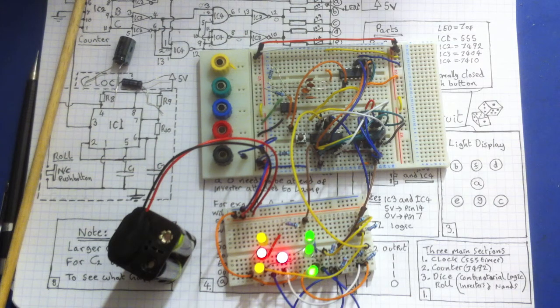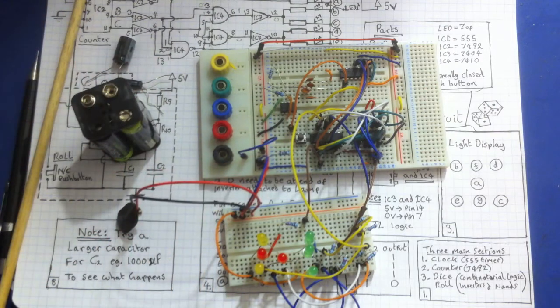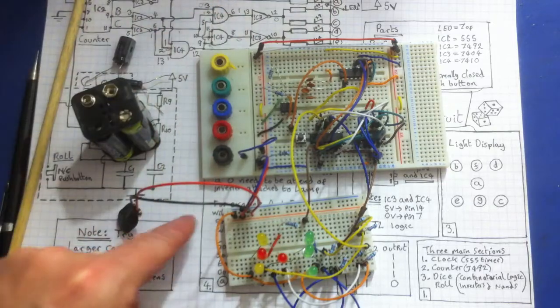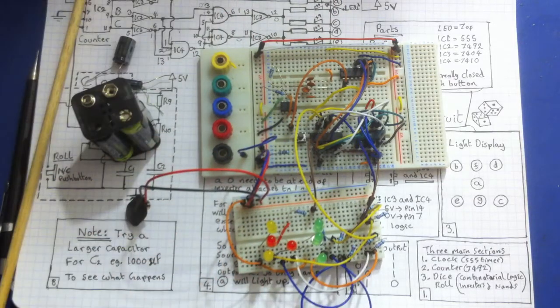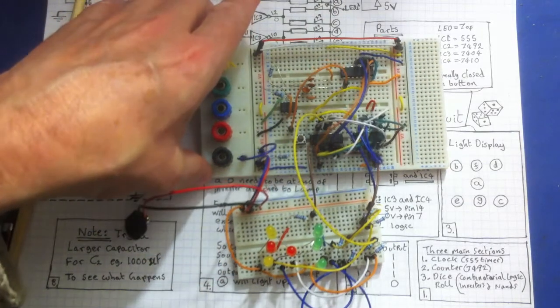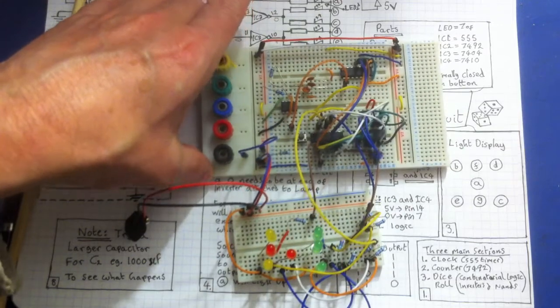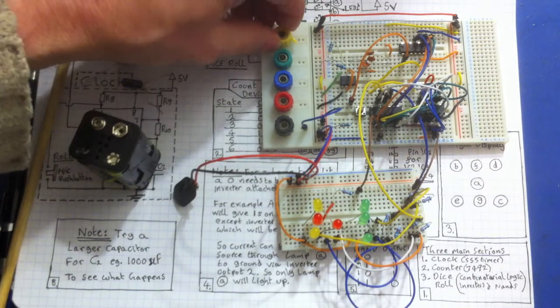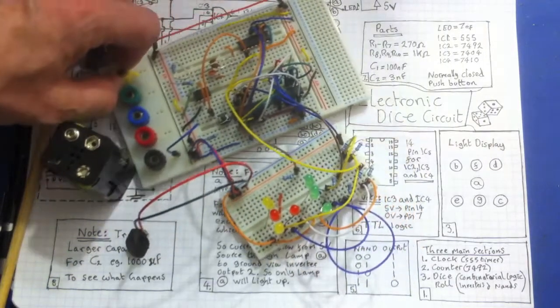So that's the circuit. Of course when this is in the tin it's a lot smaller than this. The circuit board is much, much smaller than all of this. This is all spread out because it's on a breadboard. It's actually quite a small circuit once it's all contained on the side of the circuit board. So that there is the electronic die circuit.